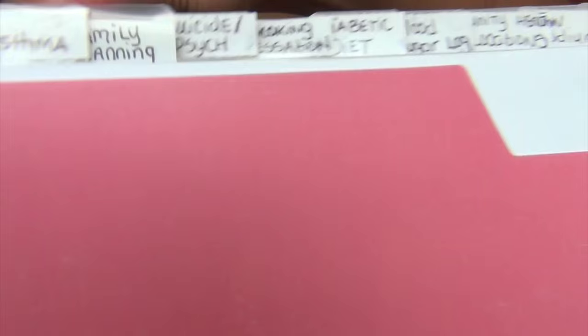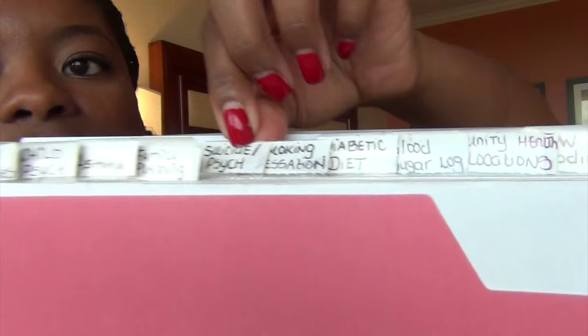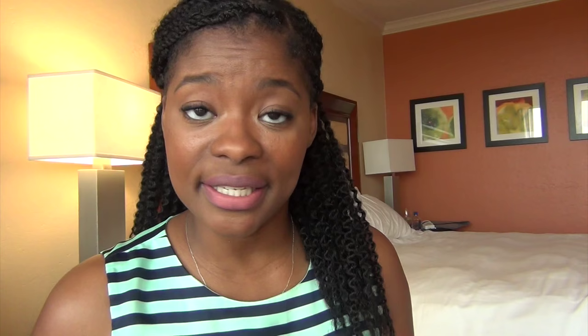I have back and neck stretches, I have child psychiatry, I have asthma, I have family planning, I have suicide psych. So instead of going through all of the tabs — because of course you can make whatever tabs you want — this patient handout file that I have is basically things that I see frequently. What works for me and what I have here may not be what you see frequently, so you just adjust it to what you see frequently.